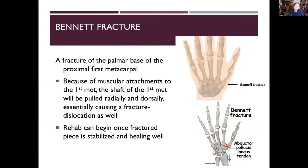A Bennett fracture is a fracture of the palmar base of the proximal first metacarpal — the thumb. The shaft of the first metacarpal is pulled radially and dorsally by the abductor pollicis longus, causing a fracture-dislocation. This results in loss of stability at the MCP joint. Rehab can begin once the fractured piece is stabilized and healing well.